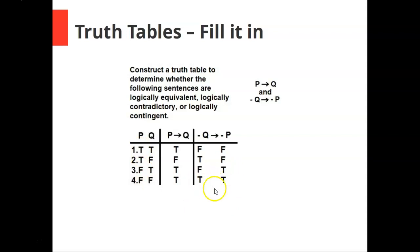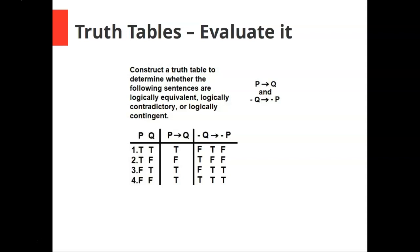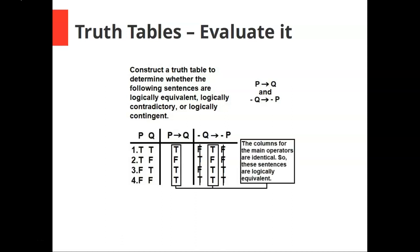Now we have the antecedent and the consequent for this conditional — it is not q and not p — so we can fill in that conditional. It's only false when you have a true antecedent and a false consequent, like on line two. Now we can evaluate: we only care about the main operator columns, and as you can see they're identical. So these two sentences are logically equivalent.